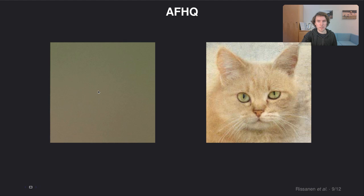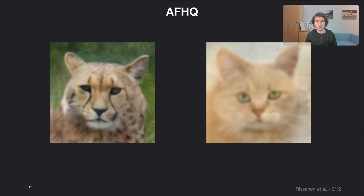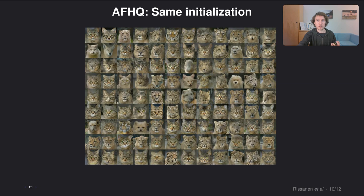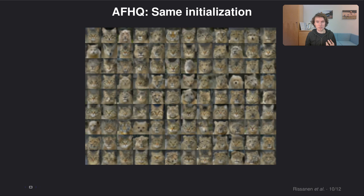And it also works on some more complex data sets such as AFHQ. And if we start generation from the same starting point, we get multiple images with the same average colorings, which is kind of cool.